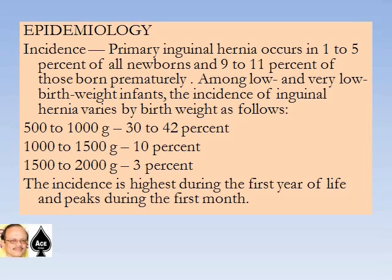Primary inguinal hernia occurs in about 1 to 5 percent of all newborns and 9 to 11 percent of those born prematurely. Among low and very low birth weight infants the incidence varies by birth weight: 500 to 1000 grams — 30 to 42 percent; 1000 to 1500 grams — 10 percent; 1500 to 2000 grams — 3 percent. The incidence is highest during the first year of life and peaks during the first month.